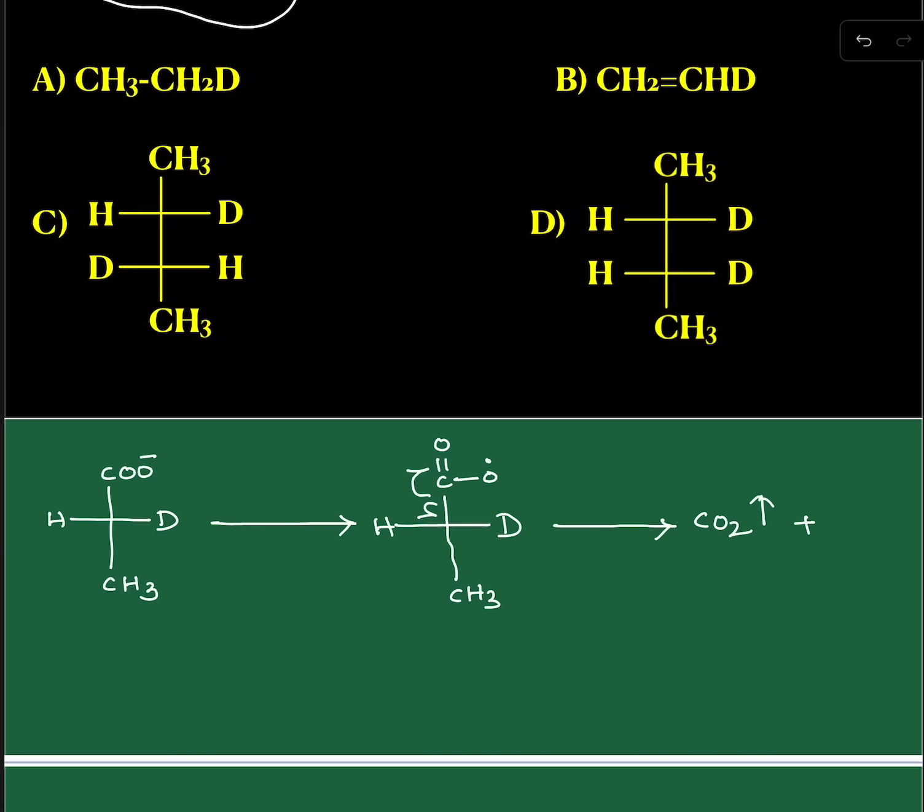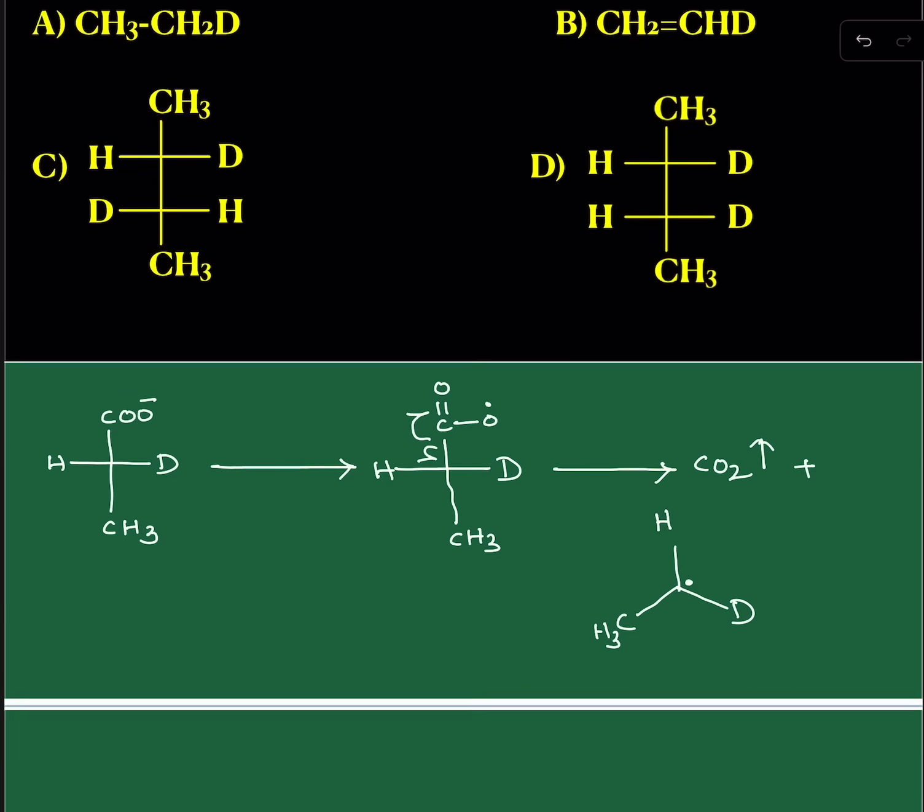And obviously, that will be sp2 hybridized. Here we have hydrogen, deuterium, and methyl group, and there is one odd electron. With sp2 hybridization, it has lost its chirality. Now this is not chiral. Now, two compounds of this category will undergo coupling.